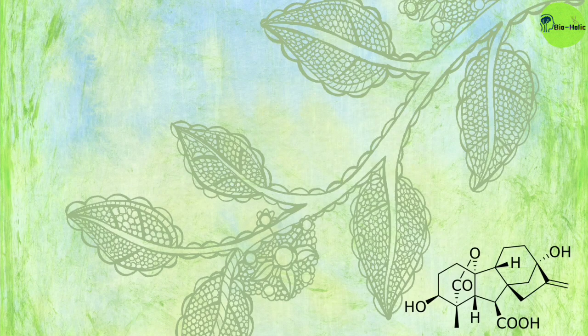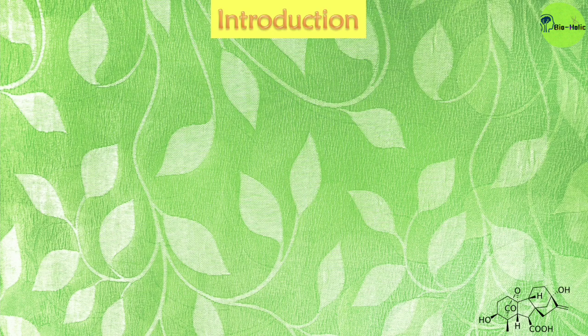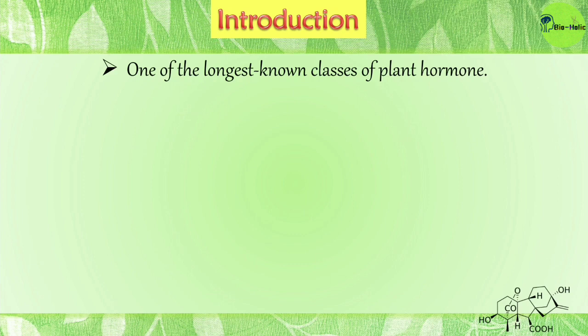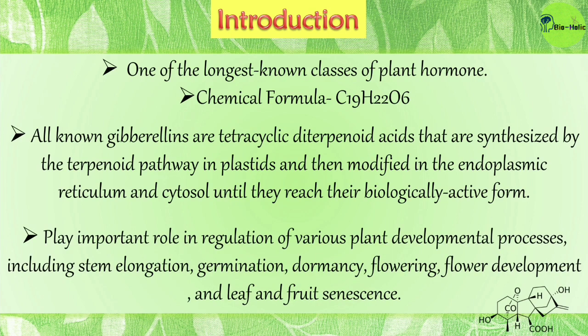After the auxin hormones, today I will discuss about the gibberellin plant hormones. Gibberellins are one of the largest known classes of plant hormones. The chemical formula of gibberellins is C₁₉H₂₂O₆. All known gibberellins are tetracyclic diterpenoid acids that are synthesized by the terpenoid pathway in plastids and then modified in the endoplasmic reticulum and cytosol.